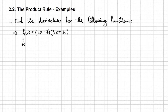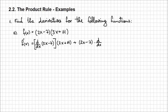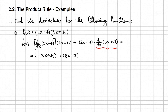f prime of x is going to be — I'm going to explicitly write what I'm differentiating first. So it's d/dx of (2x - 7) times (3x + 11) unchanged, plus (2x - 7) unchanged times d/dx of (3x + 11). Evaluating those: the first derivative is just 2, giving 2·(3x + 11), plus (2x - 7) times 3.